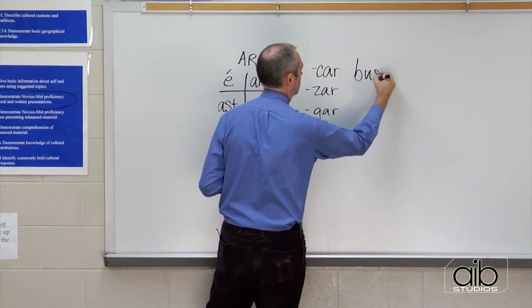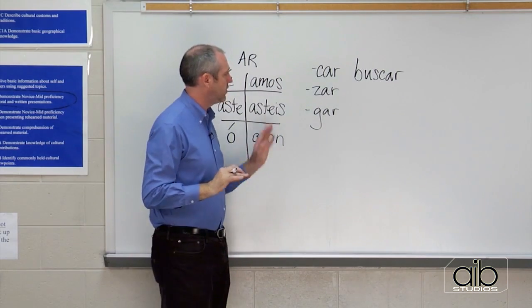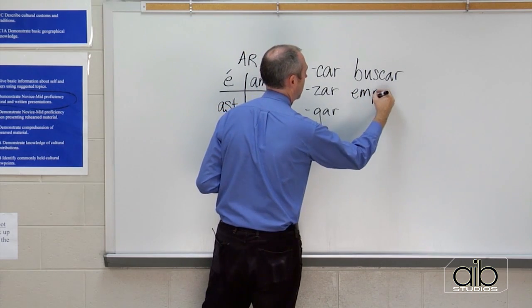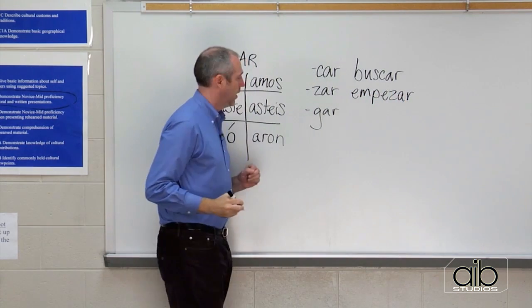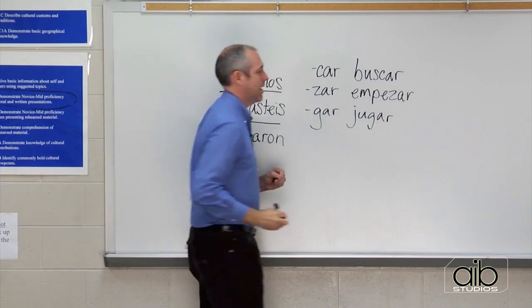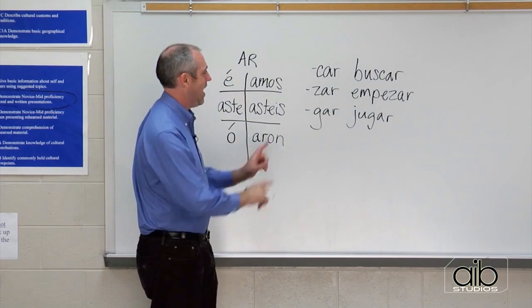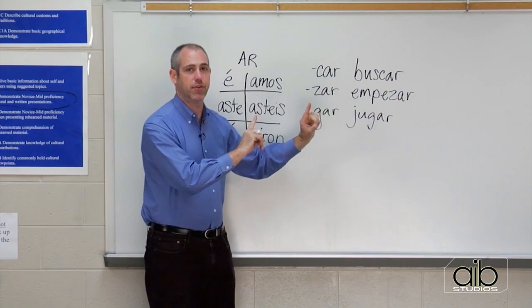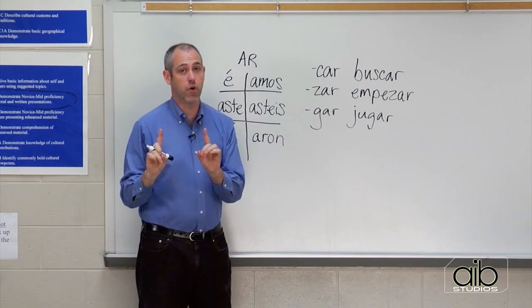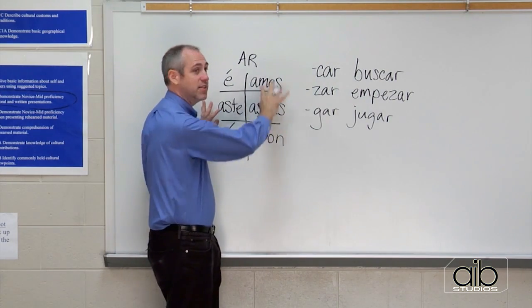So let me give you an example here. Buscar is an A-R verb that ends with C-A-R. There's an example of a C-A-R. And let's look at a Z-A-R, to begin, empezar. And then, a G-A-R, we could use jugar, to play. These are good examples of these three types. Now, what happens is, when we put this into the preterite tense, we're going to have to make a slight modification. Remember, only the yo form, only in the preterite. The other forms of these verbs will do just the same.